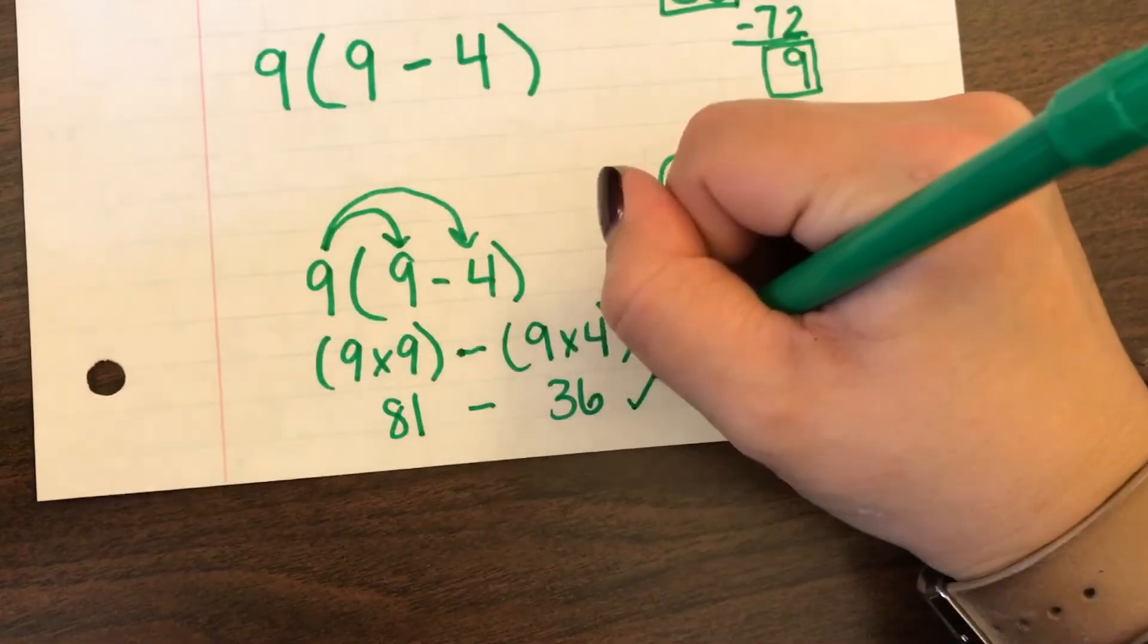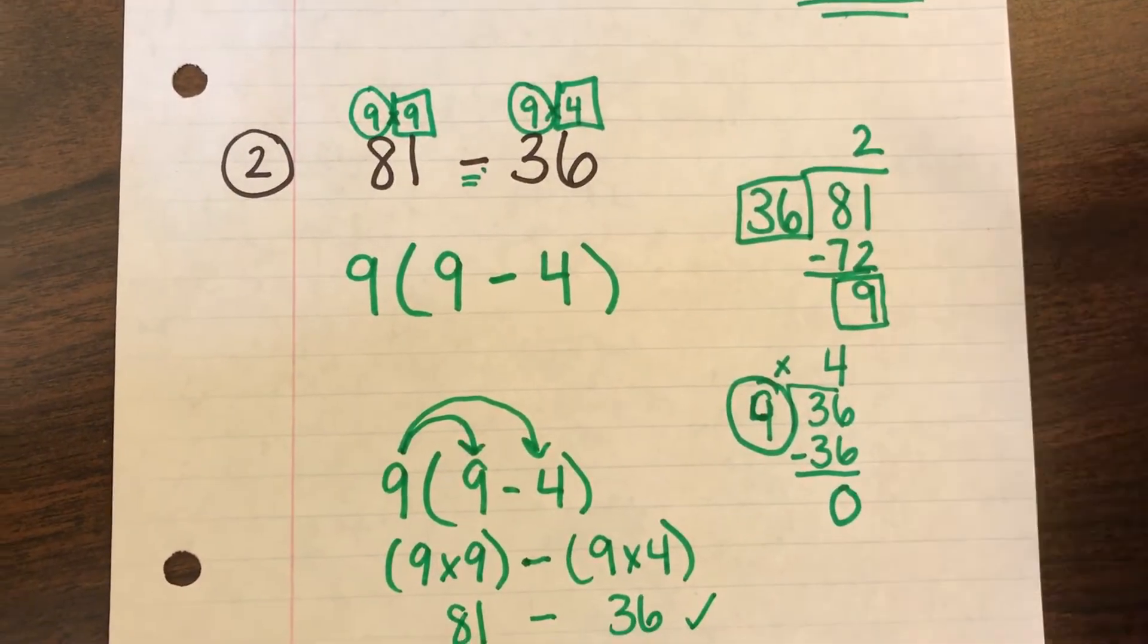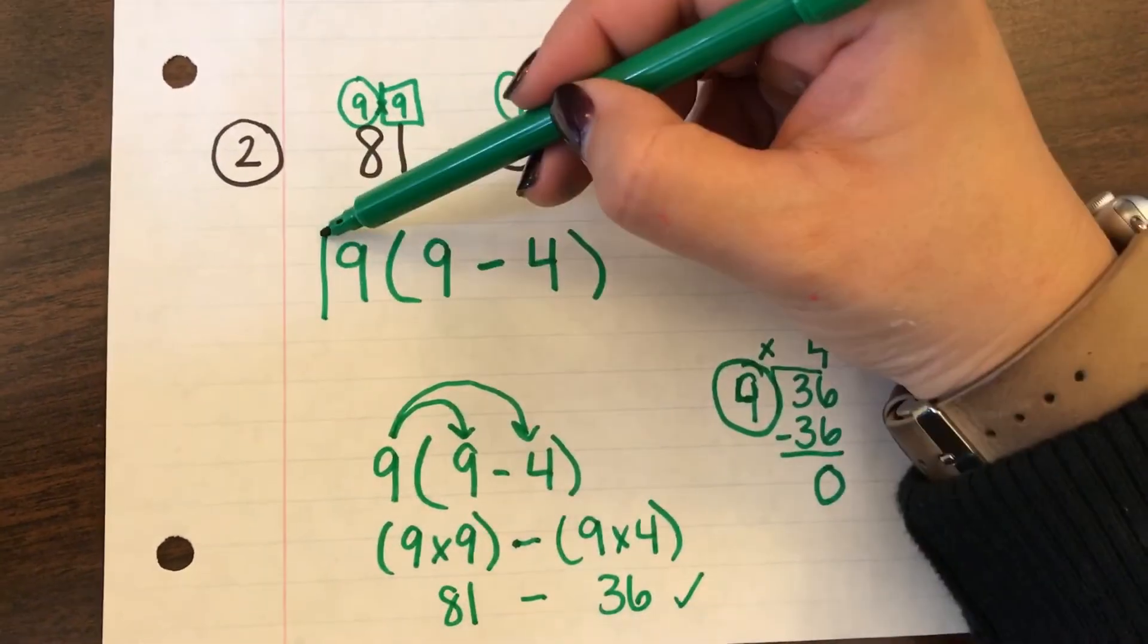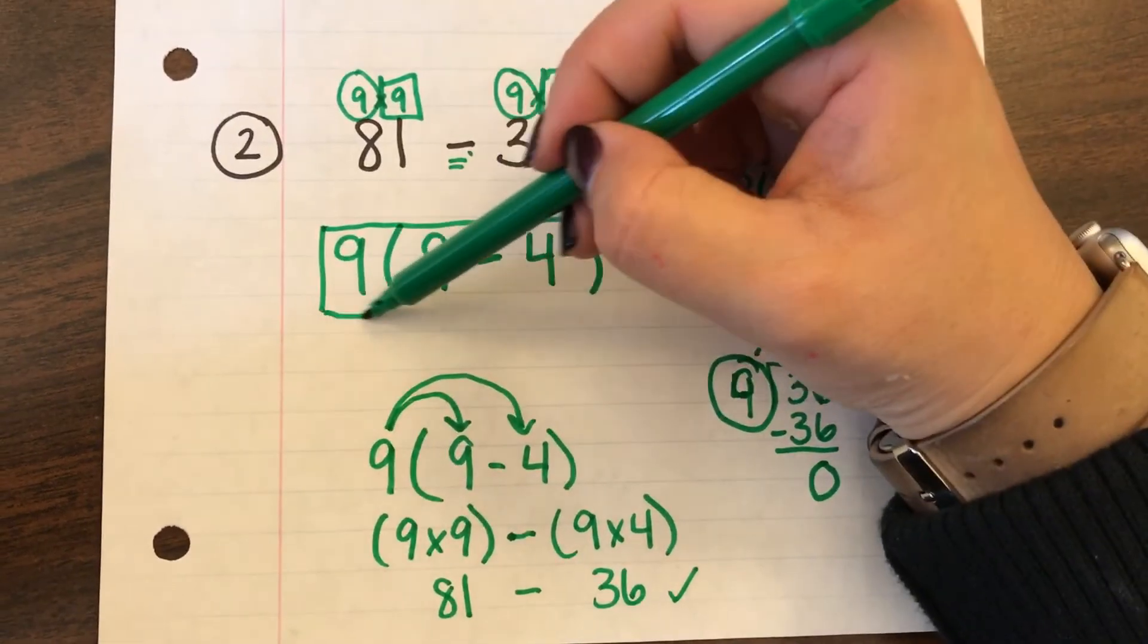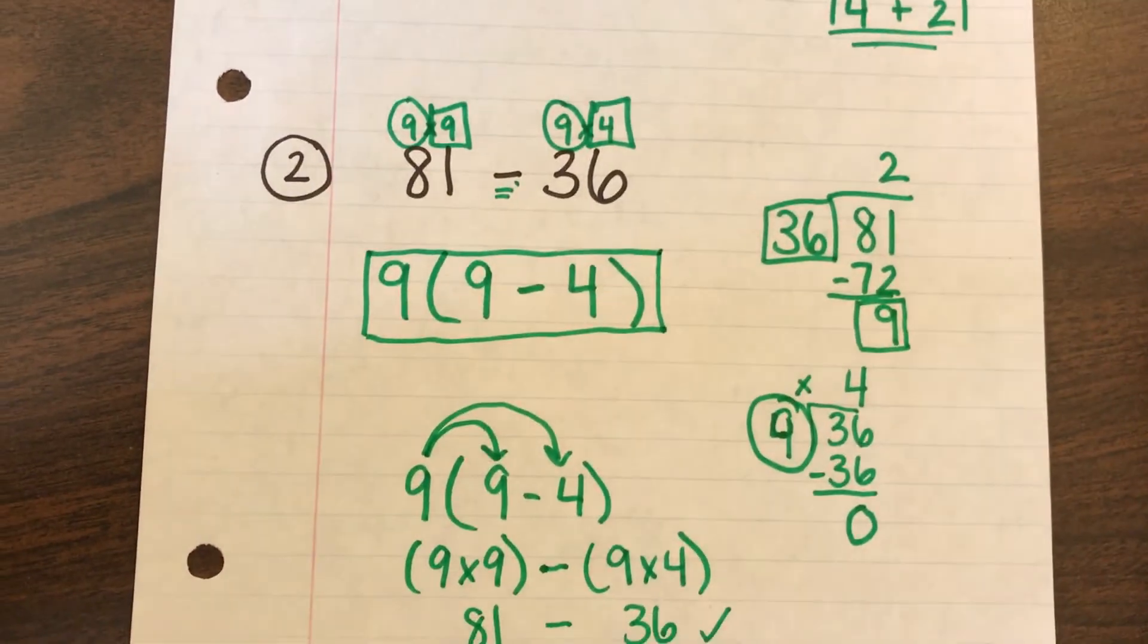And as you can see 81 minus 36 checks out. Is what my original problem was. So that means that right here this expression for distributive property is correct.